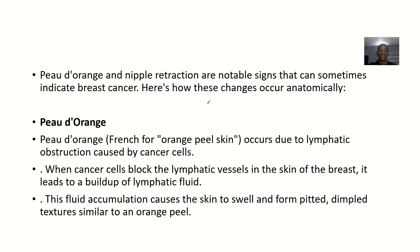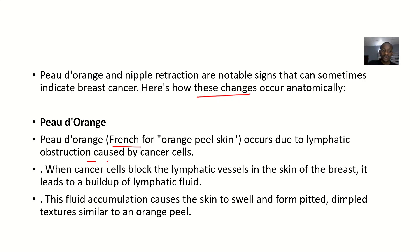So let's explain anatomically. Peau d'orange and nipple retraction are notable signs that can sometimes indicate breast cancer. Peau d'orange is a French name for orange peel skin — if you acknowledge it like that, the examiner knows you've been reading widely. It occurs due to lymphatic obstruction caused by cancer cells, which grow without any regulation, constantly proliferating and blocking the lymphatics.